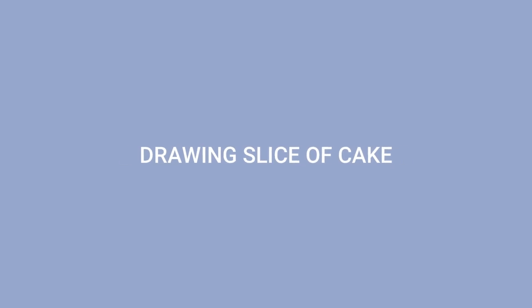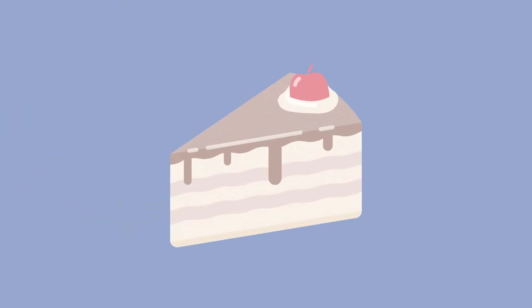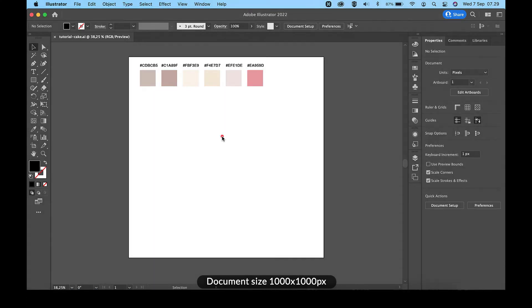Hi guys, welcome back to another Adobe Illustrator tutorial. Today we will learn how to draw a slice of cake with melted chocolate on top in Adobe Illustrator. So without further ado, let's get started. Document size: 1000 pixel width and 1000 pixel height.